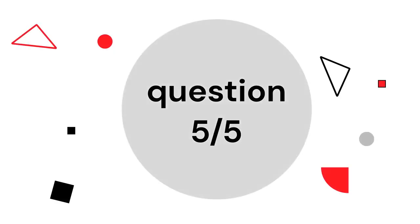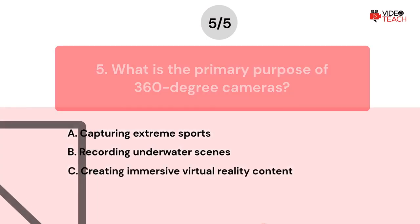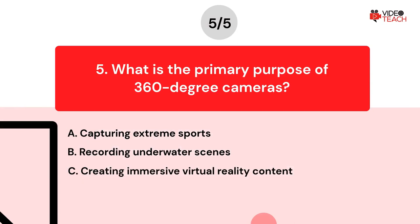Question number five. What is the primary purpose of 360 degree cameras? Option A: Capturing extreme sports. Option B: Recording underwater scenes. Option C: Creating immersive virtual reality content.